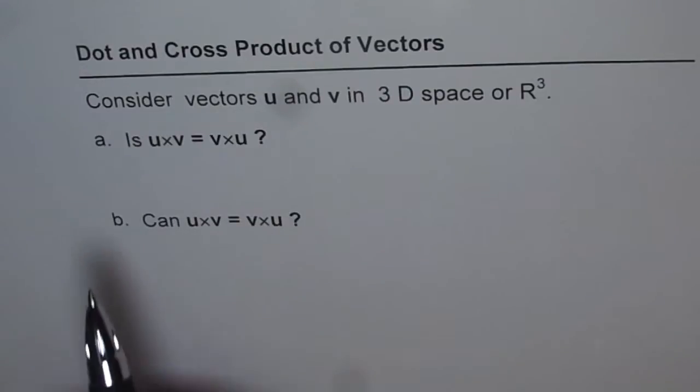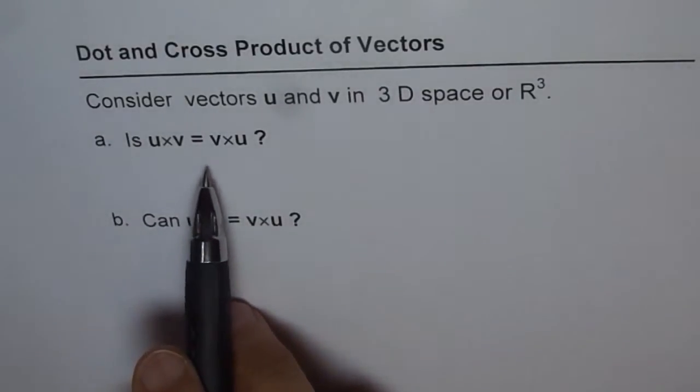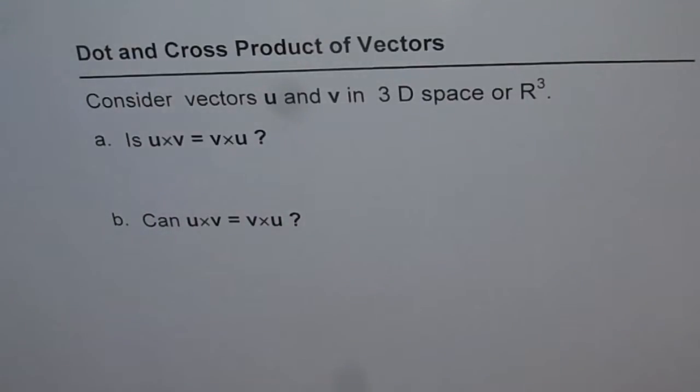Question A is: is u cross v equals to v cross u? Think and answer the question. Part B is: can u cross v be equal to v cross u?